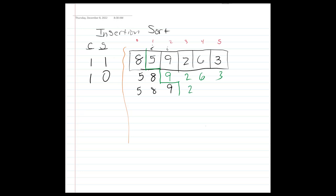Now we have five, eight, nine sorted, and two, six, three unsorted. With two, we do comparison-swap, comparison-swap, comparison-swap — three comparisons and three swaps to get two into its correct position. This leaves us with two, five, eight, and nine in our sorted array.